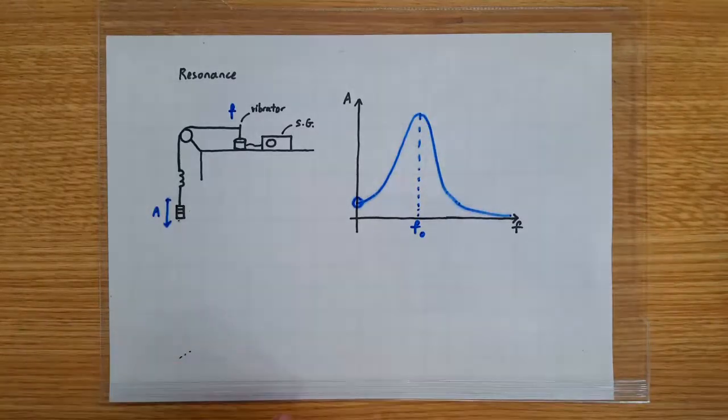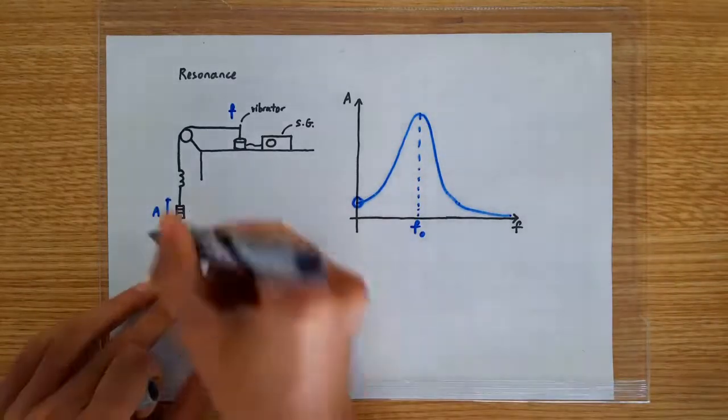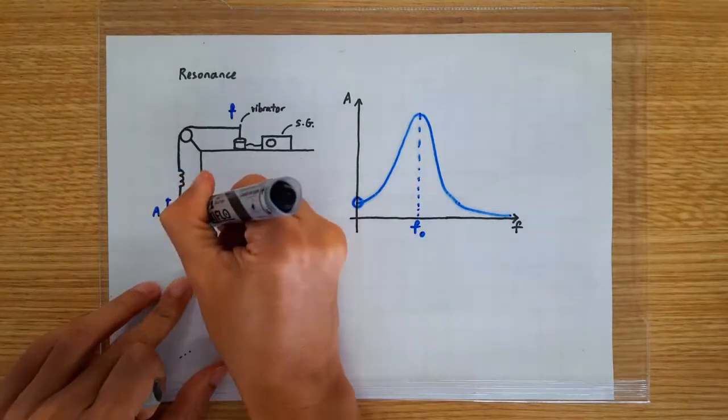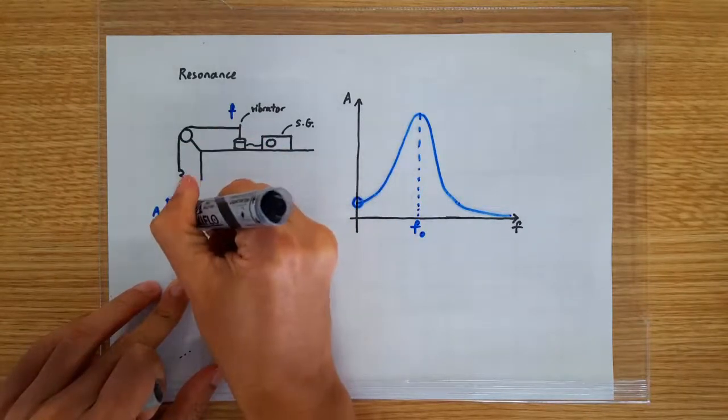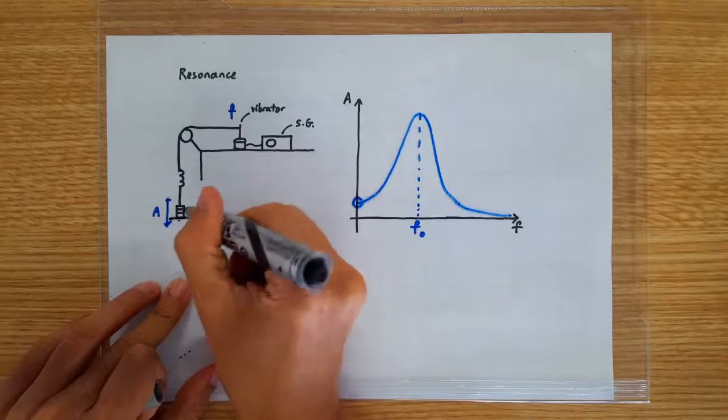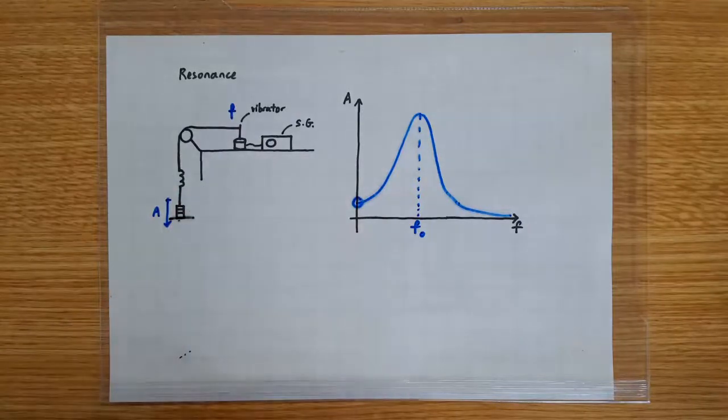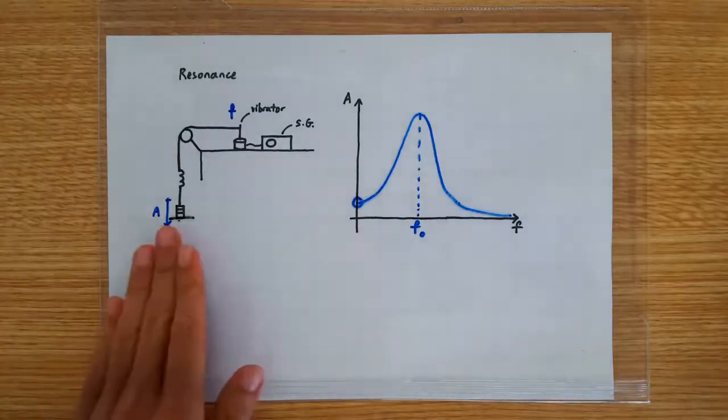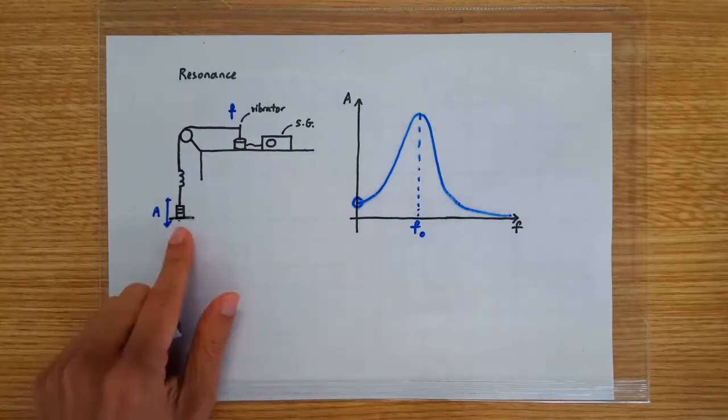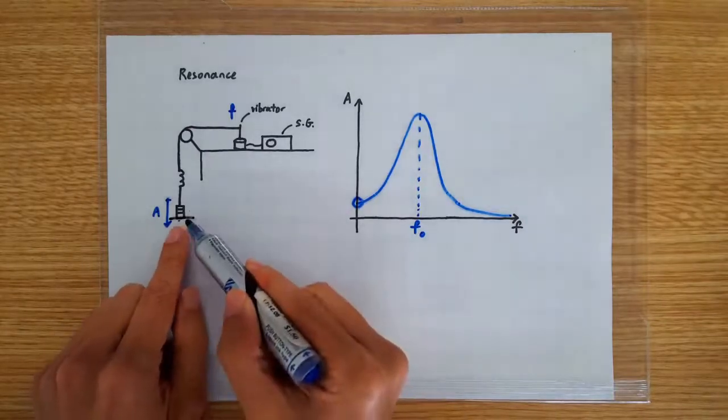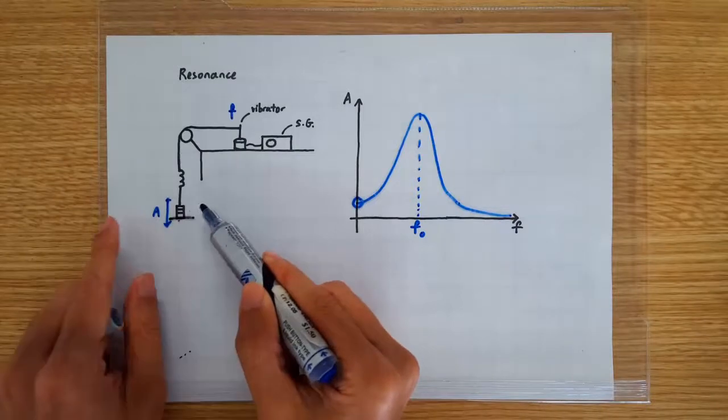So what happens if we can increase the amount of damping experienced by this oscillator? Maybe we are going to stick a cardboard onto the mass so that we increase the air resistance it encounters. So when we do that, this guy is going to lose energy to the surroundings at a faster rate.